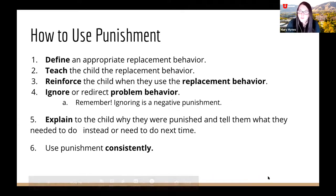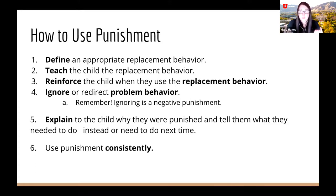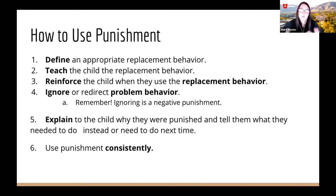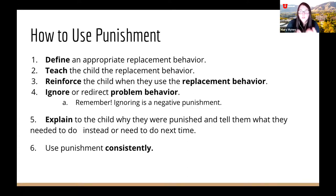If we do use punishment, there's a way to use it effectively. First, define and teach the appropriate replacement behavior that serves the same function. Model it for the child, sometimes explicitly. Then reinforce that replacement behavior to increase the likelihood they'll use it. Whenever the problem behavior occurs, ignore it or redirect it. Ignoring is a form of punishment because you're taking away the attention they get from their problem behavior.